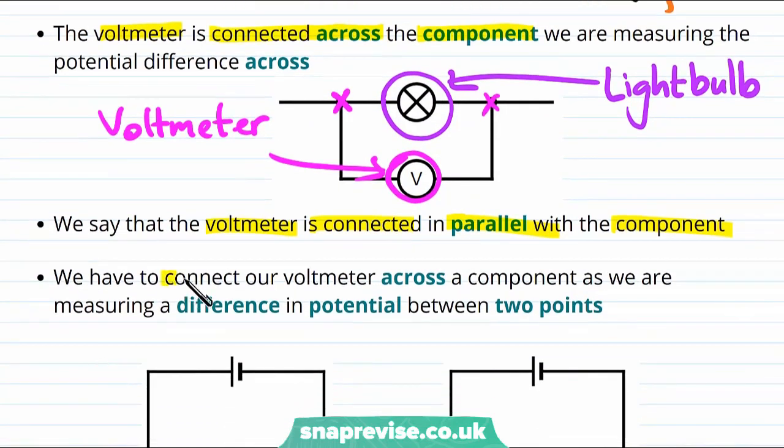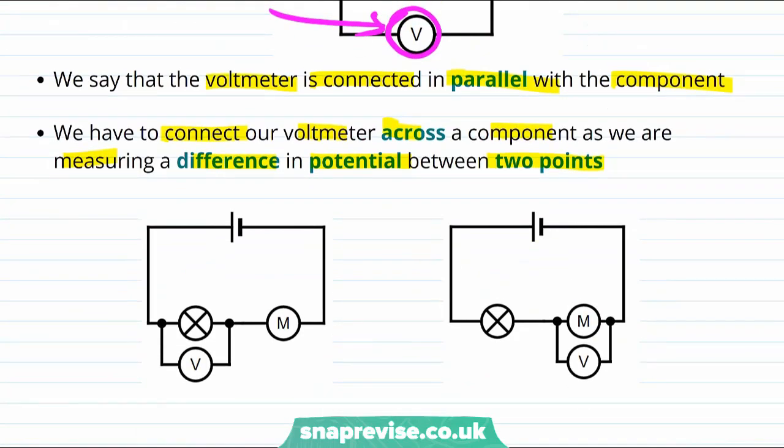We have to connect our voltmeter across a component because we are measuring the difference in potential always between two points. Looking at a slightly more complicated circuit which has a motor and a light bulb.